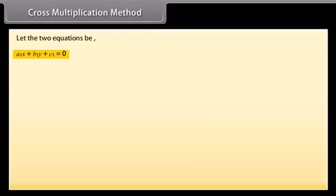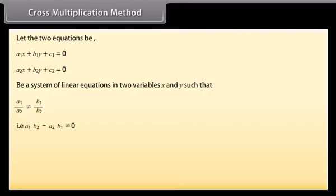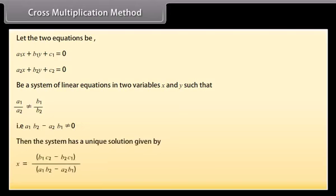Cross multiplication method: Let a1x + b1y + c1 = 0 and a2x + b2y + c2 = 0 be a system of linear equations in two variables x and y, such that a1/a2 ≠ b1/b2, i.e., a1b2 − a2b1 ≠ 0. Then the system has a unique solution: x = (b1c2 − b2c1) / (a1b2 − a2b1) and y = (c1a2 − c2a1) / (a1b2 − a2b1).